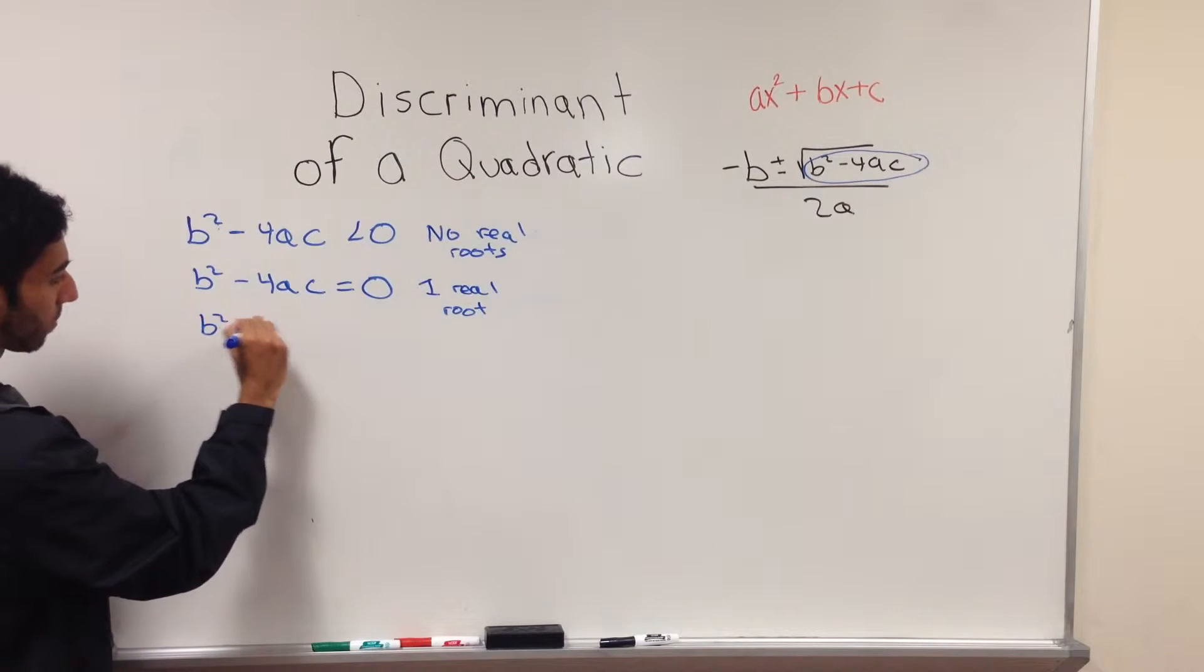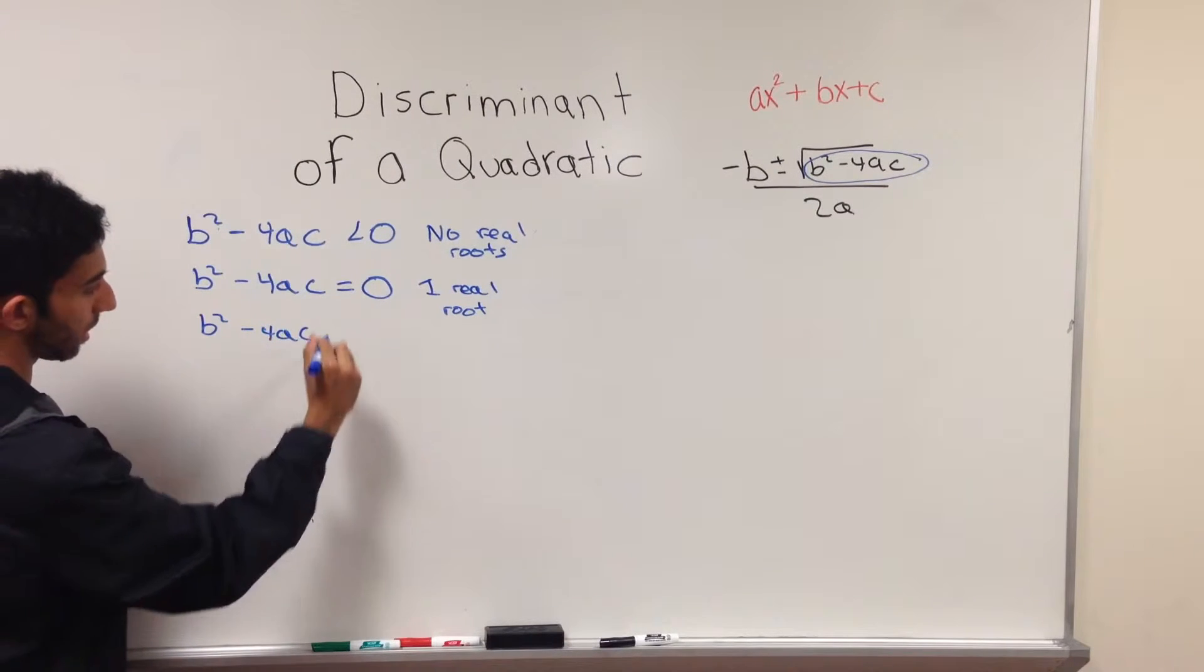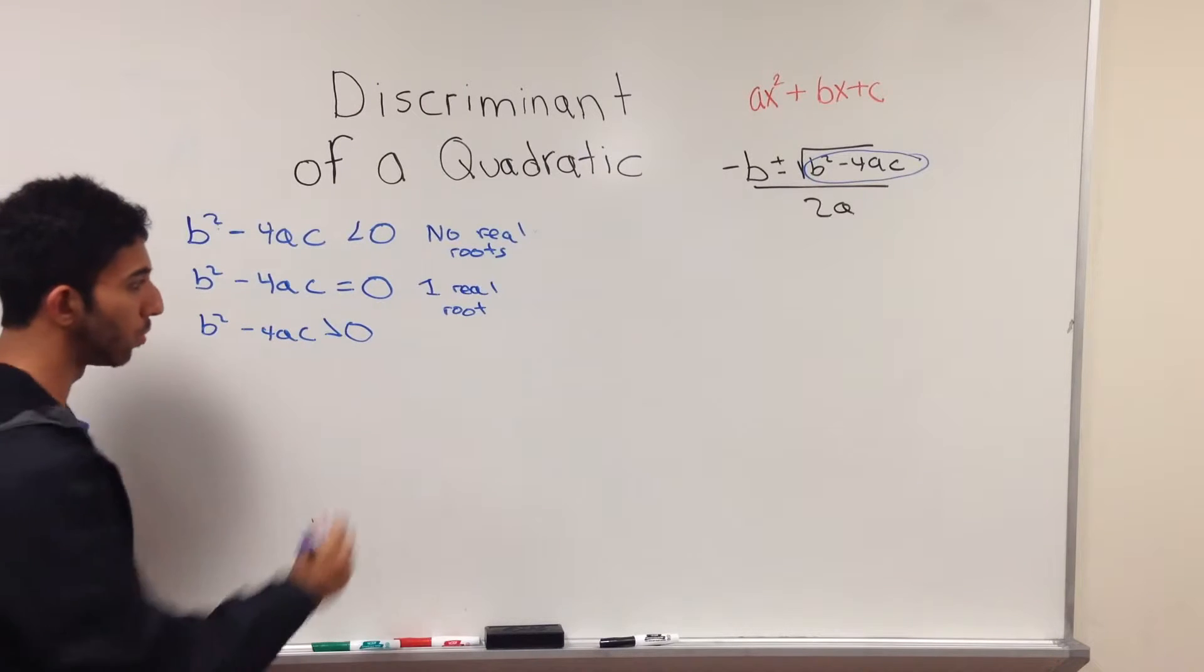When b² - 4ac is greater than zero, you will have two distinct roots.